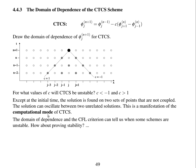The domain of dependence and the CFL criterion can tell us when some schemes are unstable, but how do we ever prove stability? At the back of this chapter in your lecture notes there are some exercises based on this video. In the next video we're going to look at von Neumann stability analysis, which is how we can prove when a scheme will be stable.